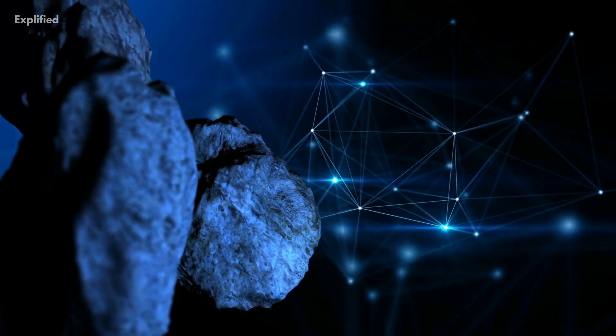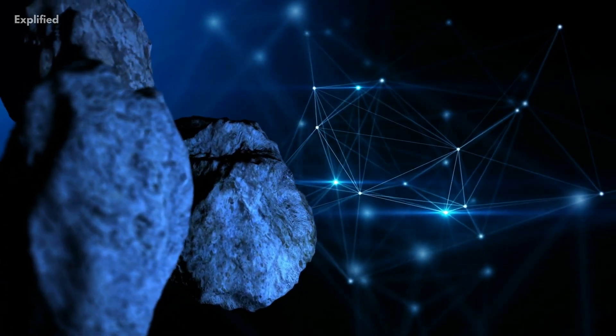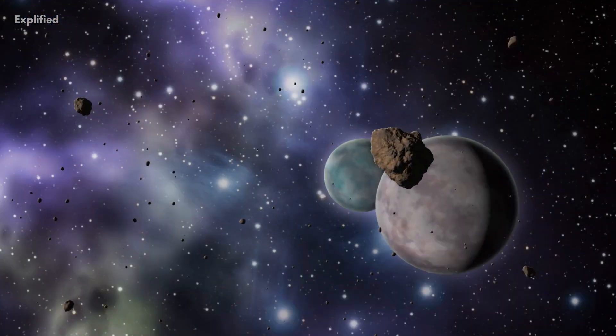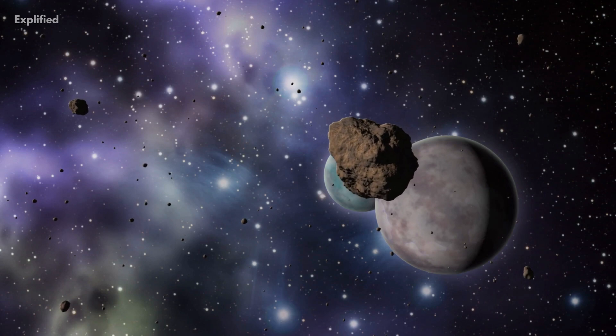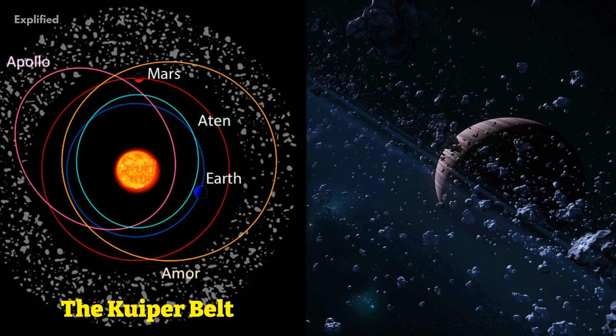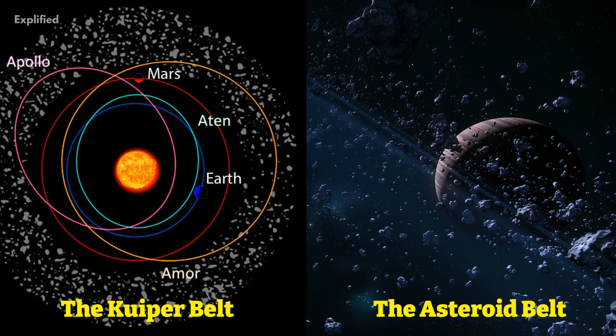The Kuiper belt is estimated to be around 20 times as wide and 200 times as massive as the asteroid belt. The asteroid belt itself is estimated to be about 4% of the mass of the moon. The Kuiper belt is also much bigger than the asteroid belt.